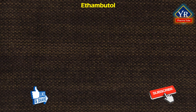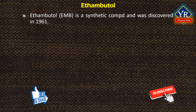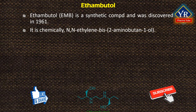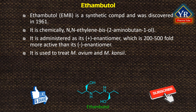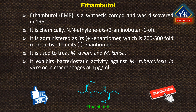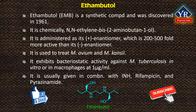The last drug of this lesson is ethambutol. Ethambutol, abbreviated EMB, is a synthetic compound discovered in 1961. Chemically, it is N,N'-ethylene bis(2-aminobutane-1-ol). It is administered as its dextro-enantiomer, which is 200 to 500 times more active than its levo-enantiomer. It may be used to treat Mycobacterium avium complex and Mycobacterium cansasi. It exhibits bacteriostatic activity against Mycobacterium tuberculosis in vitro or in macrophages at 1 microgram per ml. It is usually given in combination with other tuberculosis medications such as isoniazid, rifampicin, and pyrazinamide.